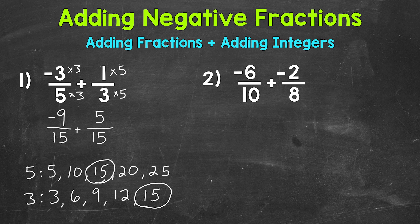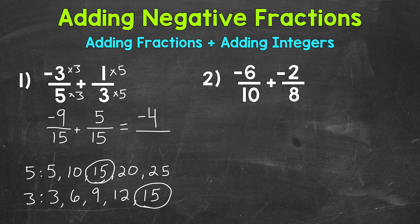Now we have a common denominator, so we are able to add. Just like when we add positive fractions, we add our numerators. Negative 9 plus a positive 5 gives us negative 4 — that's our numerator. Keep the denominator of 15 the same. The only common factor between our numerator and denominator is 1, so we are in simplest form. Our answer is negative 4 fifteenths.